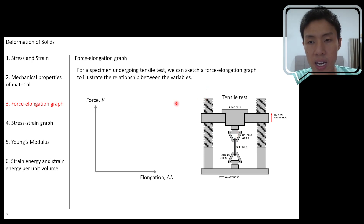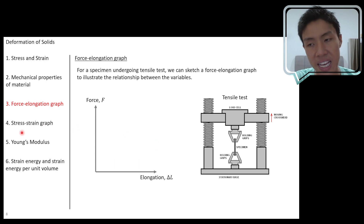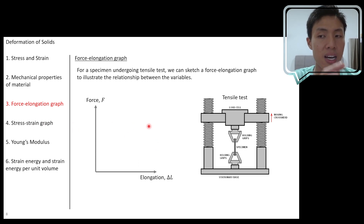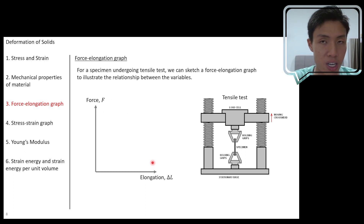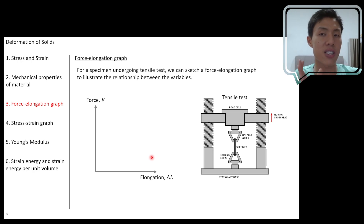After that, you can plot a graph of force against elongation — this is what we call the force-elongation graph. In later videos, we will look at the pattern: what can we see when we have a force-elongation graph for brittle objects or for ductile objects? But for now, let's just note that we can sketch such a graph called the force-elongation graph.